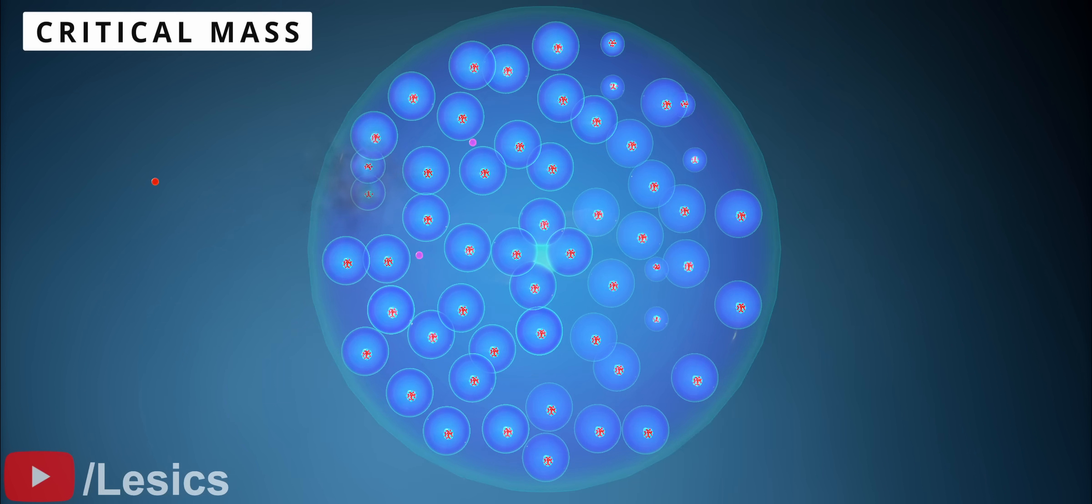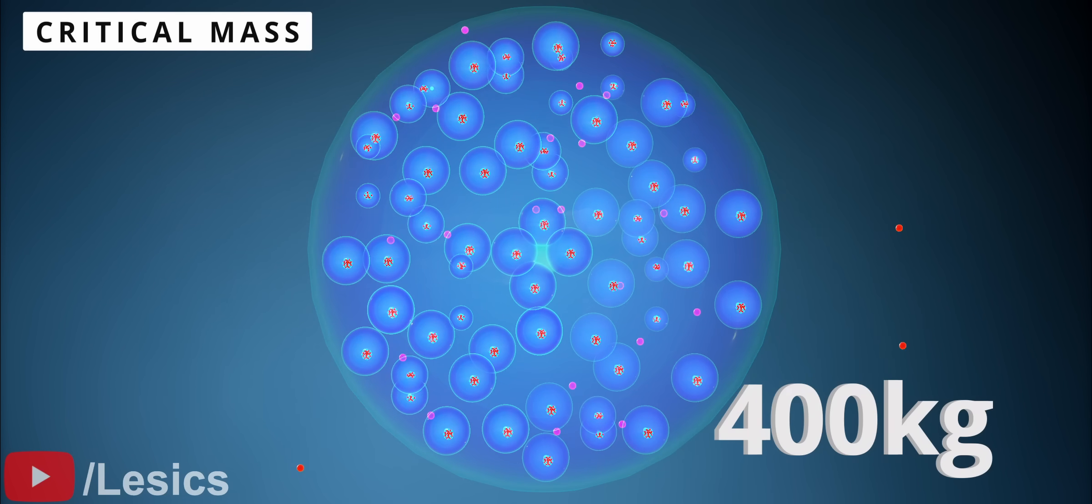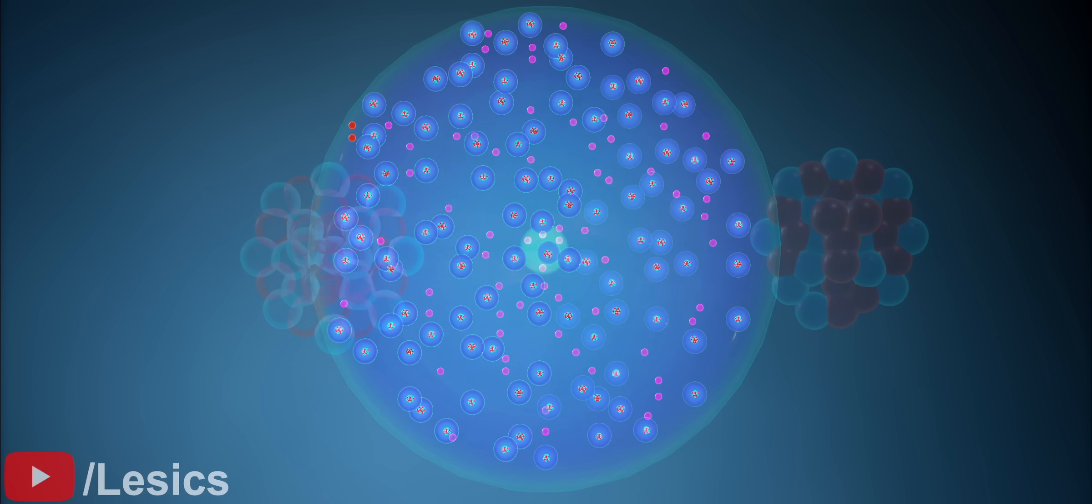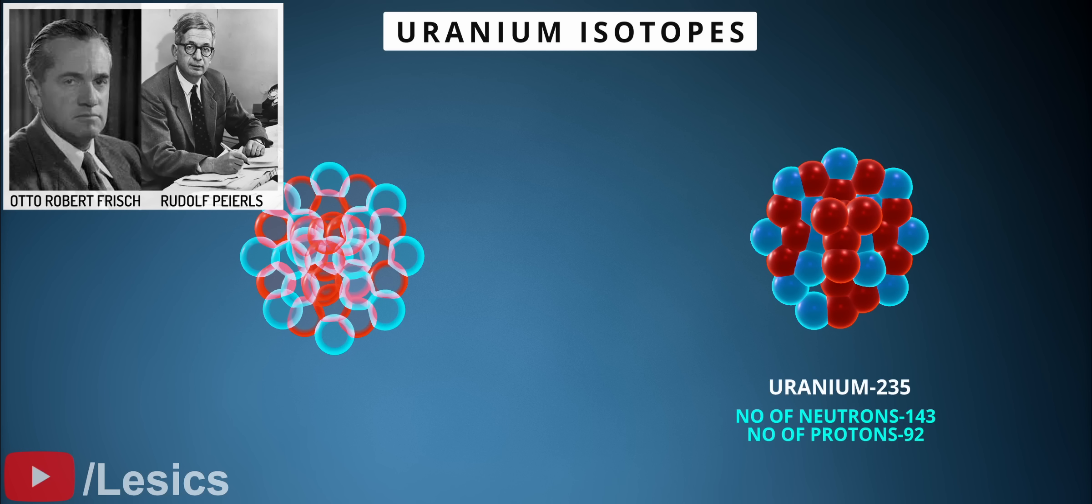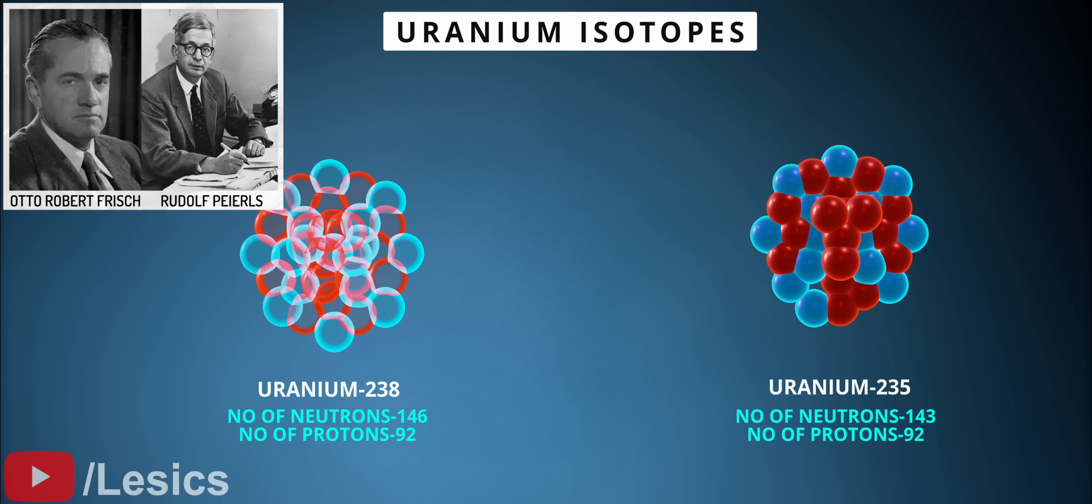Unfortunately, the critical mass of natural uranium is too high – 400 kilograms. Researchers from England soon came to the rescue. They found two important isotopes of uranium – uranium-235 and uranium-238.